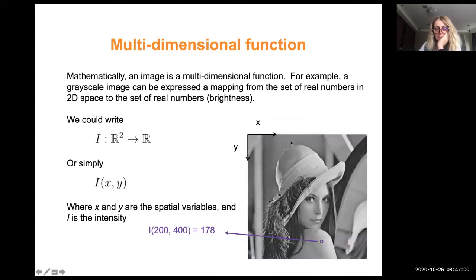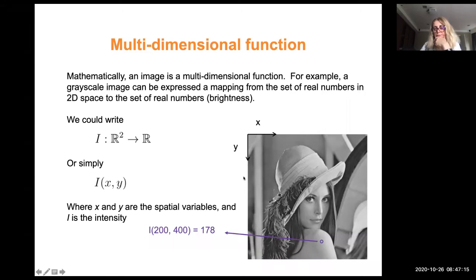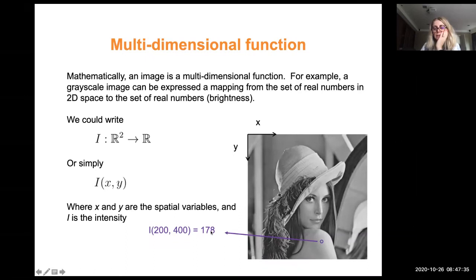We defined an image with a mathematical definition: it's a function from 2D spatial domain R². As we see here, x and y are spatial coordinates — for instance x equals 200, y is 400, and I(x,y) takes the value 178. This is a single-band, single-channel image — we call it grayscale. X and y are the spatial variables, and I is the intensity.